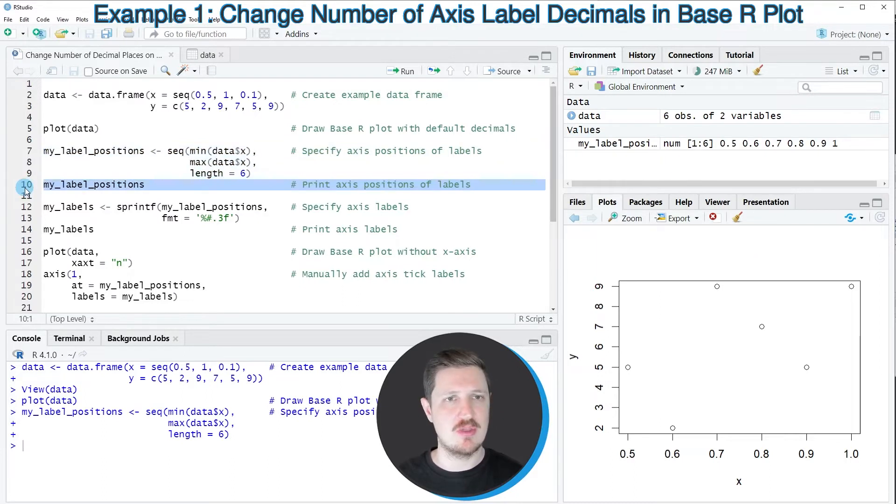And after printing this data object to the bottom in the RStudio console, you can see that this data object contains the positions of the labels that we want to add later on to our plot.